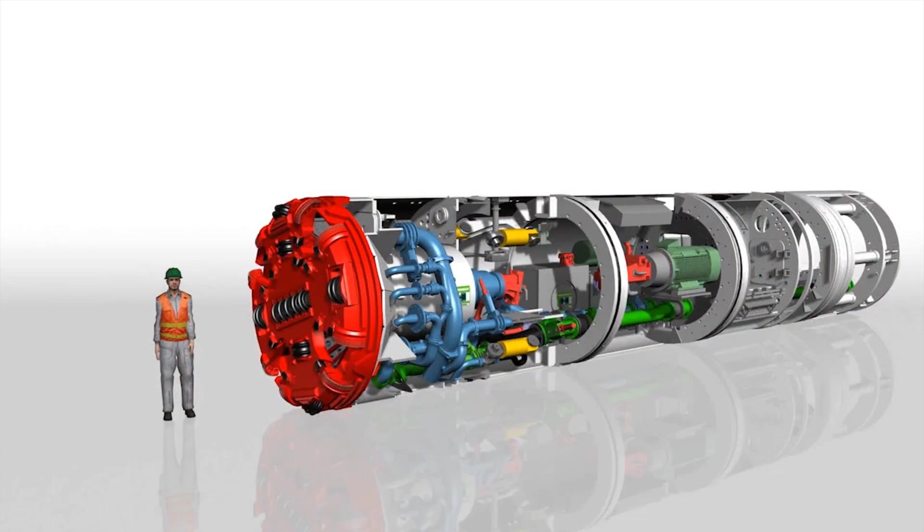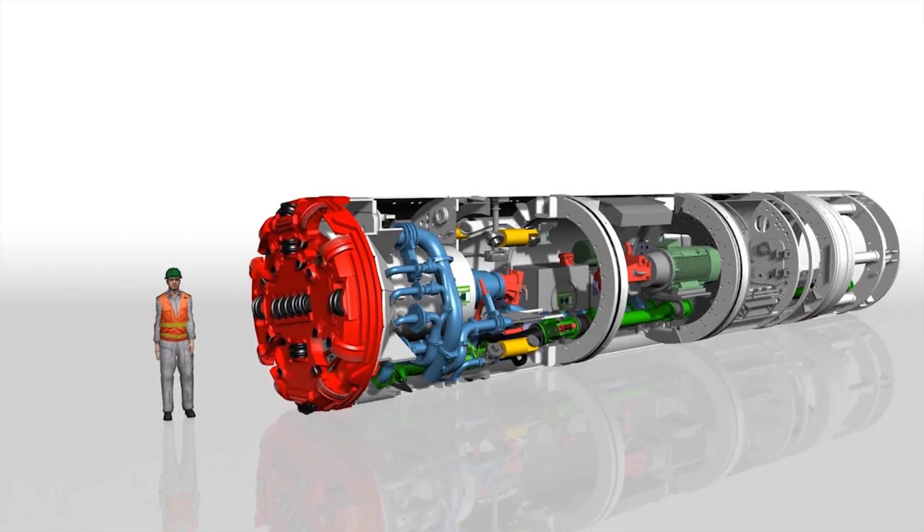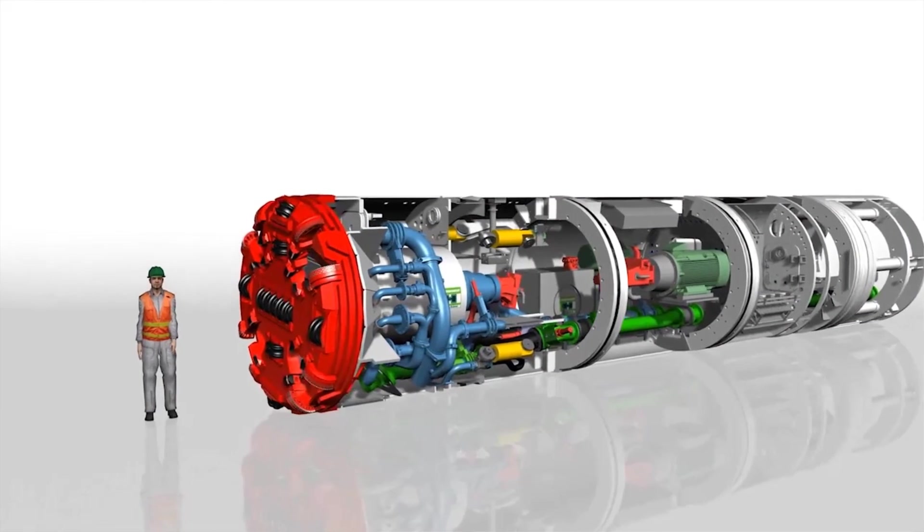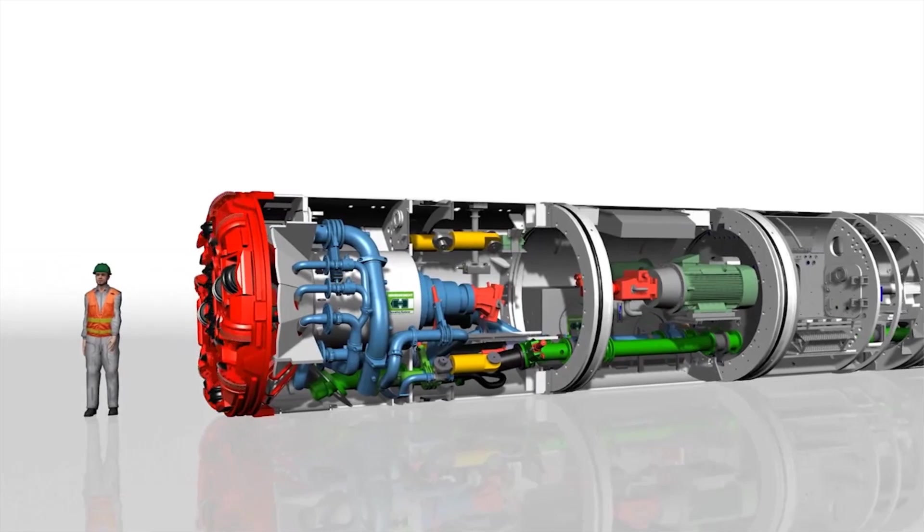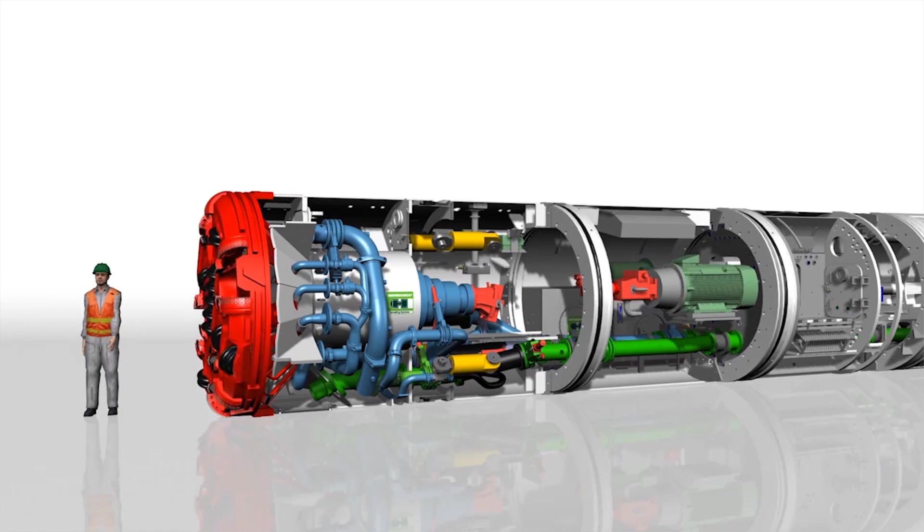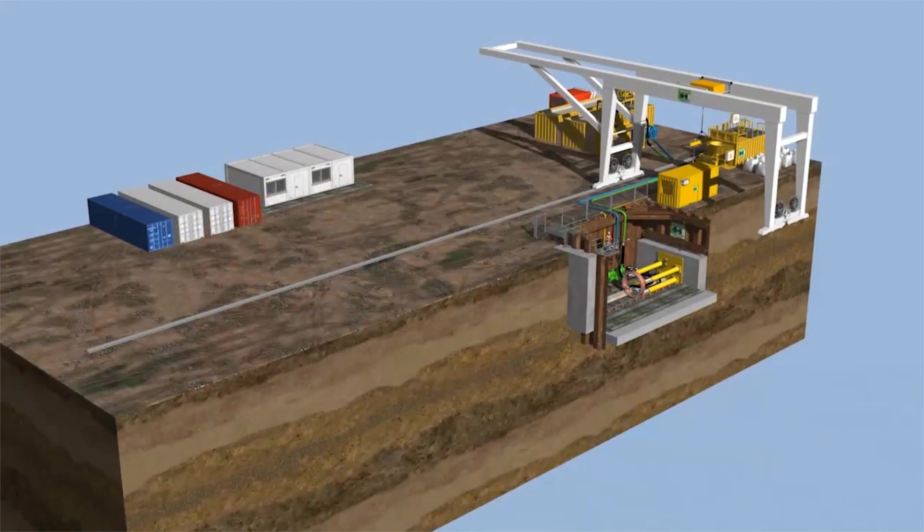The AVND machine series shown here is an advanced version of the proven AVN technology. Thanks to a pressure chamber, this machine can switch from slurry to mixed shield mode during ongoing operations and thus open up a greater range of heterogeneous soils.